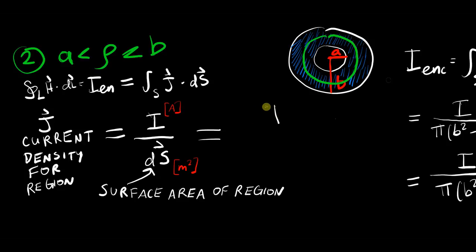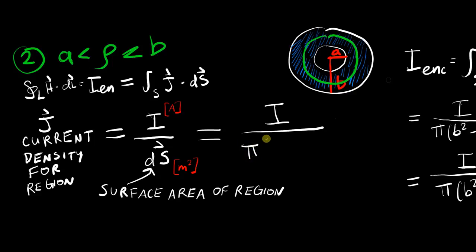The surface area of the annular region is π·b² minus π·a², giving a donut-shaped area. Factoring out π, the current density J equals i divided by π(b² − a²).